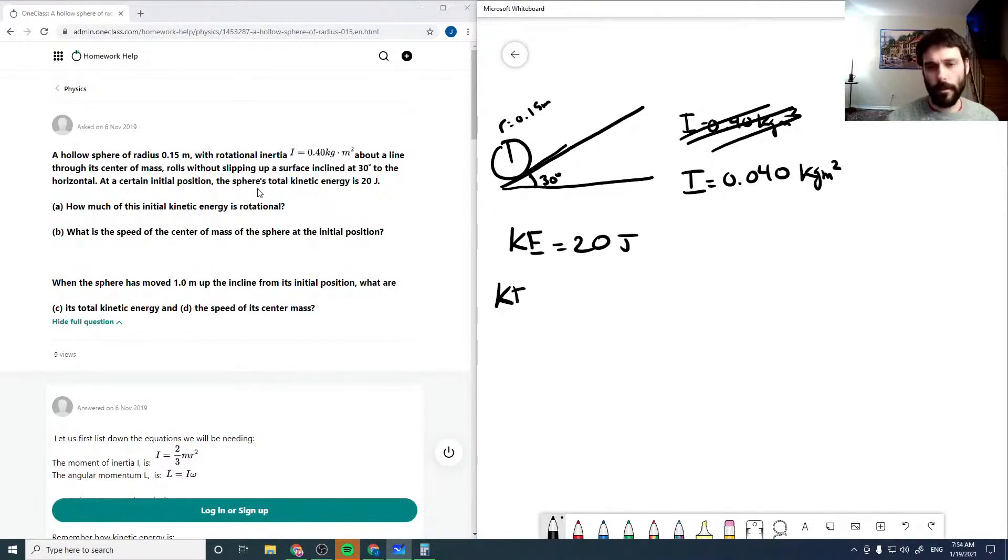And now our kinetic energy is going to be translational plus rotational. So our translational is just one half mv squared. And our rotational is one half I omega squared. We know that our omega is v over r. And we can look up that our moment of inertia for a hollow sphere is two thirds mr squared.